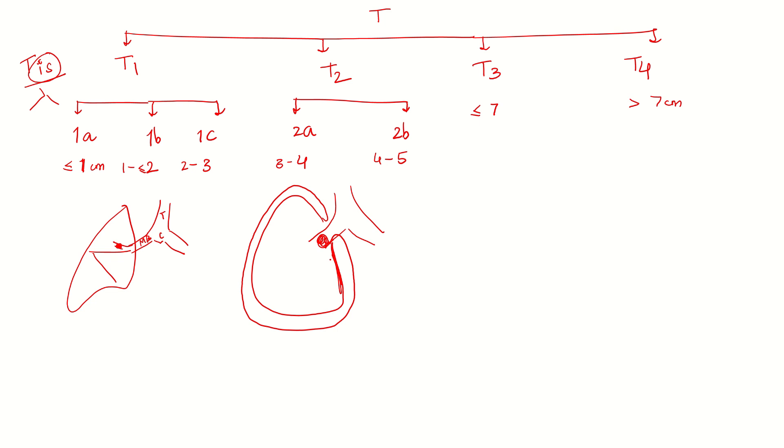If the bronchus is obstructed due to the tumor, it can lead to atelectasis, which means collapse of the lung. This collapse can also result in obstructive pneumonitis. Inflammation within this will cause pneumonitis. So there are three things here: involvement of main bronchus, visceral pleura, which can result in atelectasis or obstructive pneumonitis.